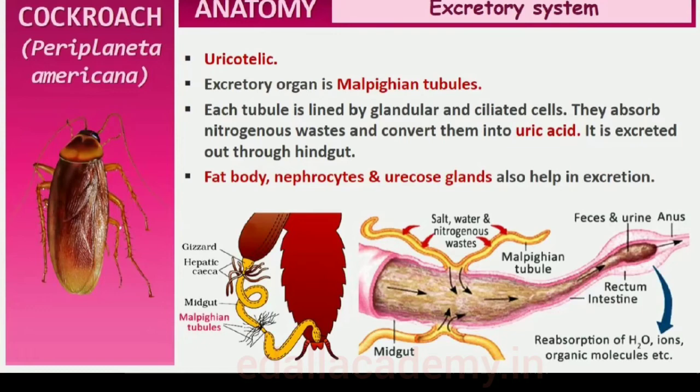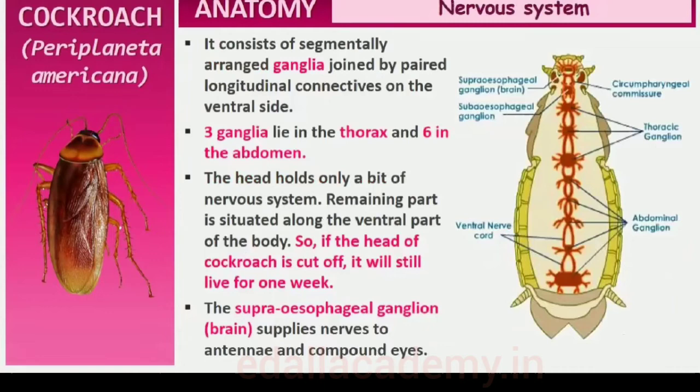The nervous system of cockroach consists of a series of fused, segmentally arranged ganglia joined by paired longitudinal connectives on the ventral side. Three ganglia lie in the thorax and six in the abdomen. The nervous system of cockroach is spread throughout the body. The head holds a part of the nervous system while the rest is situated along the ventral part of its body. So, if the head of a cockroach is cut off, it will still live for as long as one week.